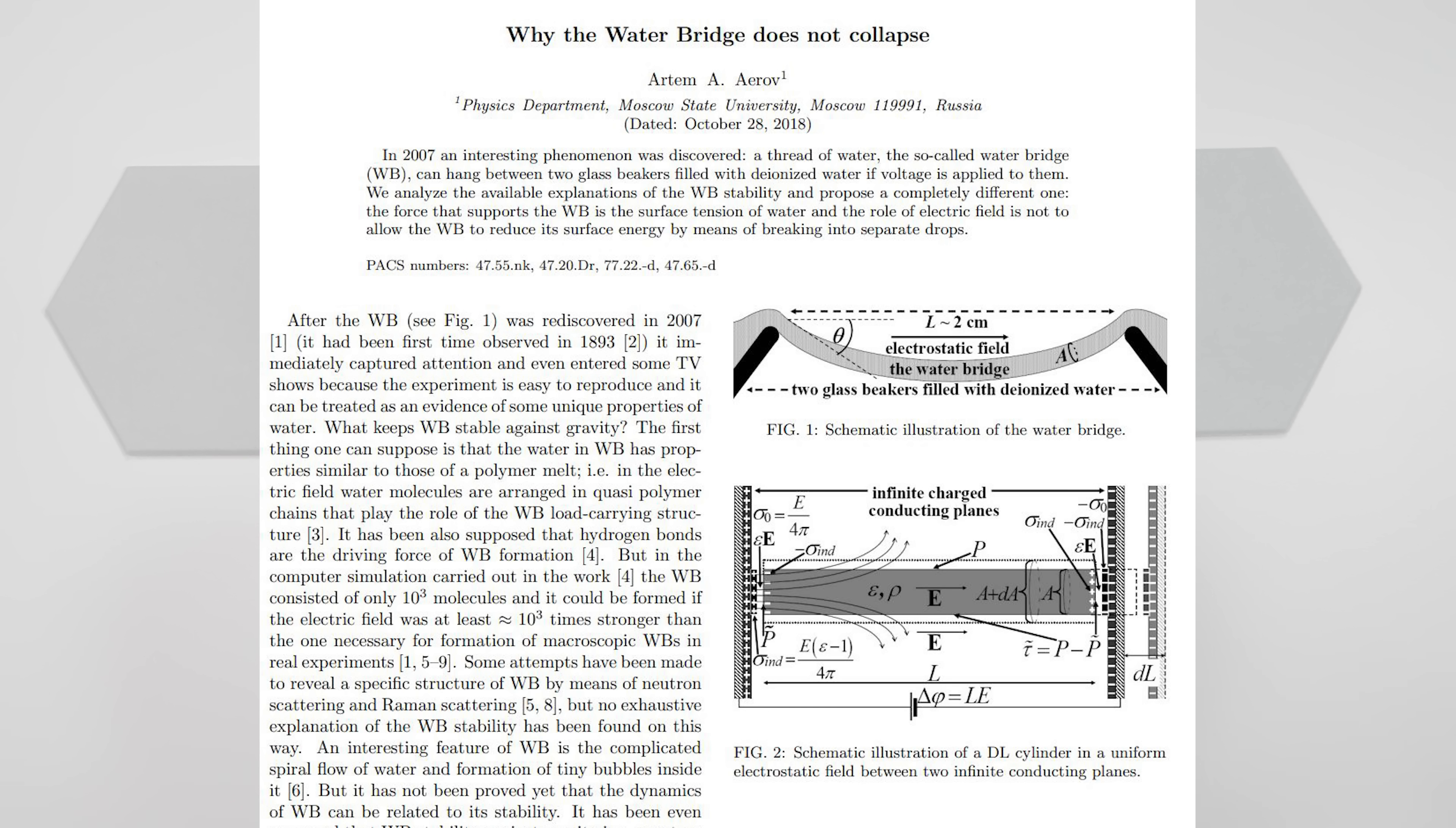So why doesn't the water bridge just collapse? Well, normally the surface tension of water wants to break the bridge to form spherical droplets. But the electric field energy is actually lowest when the water is in a cylindrical shape. So it's actually more energetically stable to form a cylinder than to break the bridge. So it forms a stable water bridge when you have these high voltages.